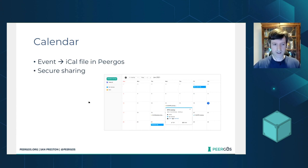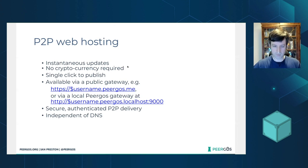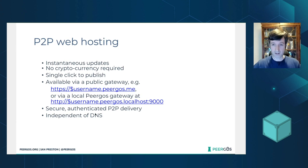The second cool thing from 2020 was peer-to-peer web hosting. This lets you host a static website directly from a folder in your Pyrgos space. You get instantaneous updates, and there's no cryptocurrency required for publishing or updating — it's basically a single click to publish. Once you've done so, you can view your website via any public Pyrgos gateway. We've set one up at peergos.me, so it would be yourusername.peergos.me. But a much cooler way to view it is peer-to-peer: if you run Pyrgos locally, you can view it at username.peergos.localhost, totally independent of DNS with secure authenticated peer-to-peer delivery.